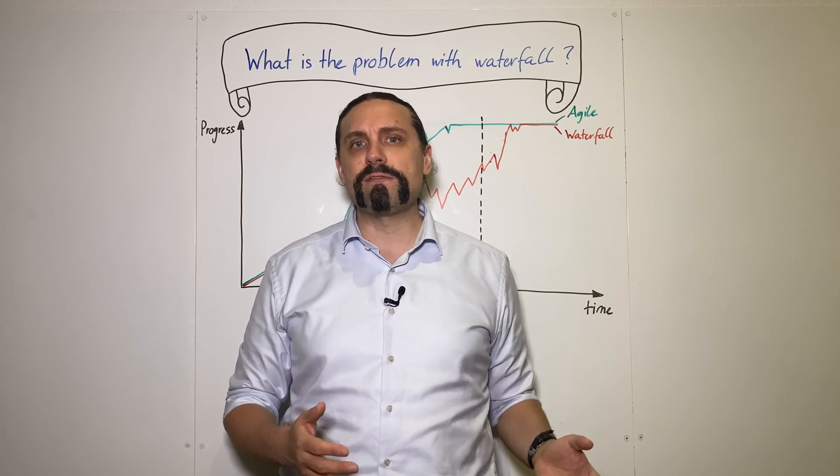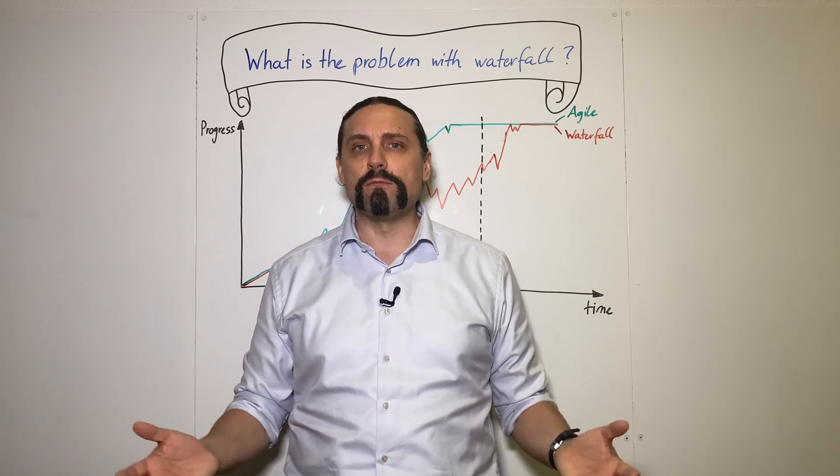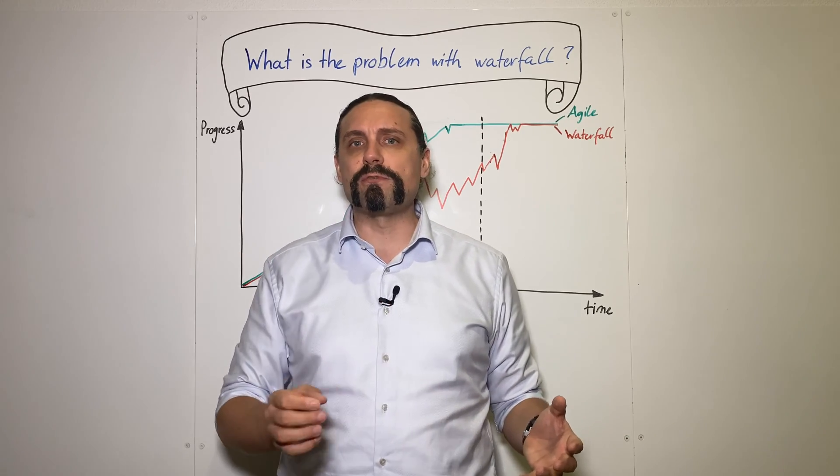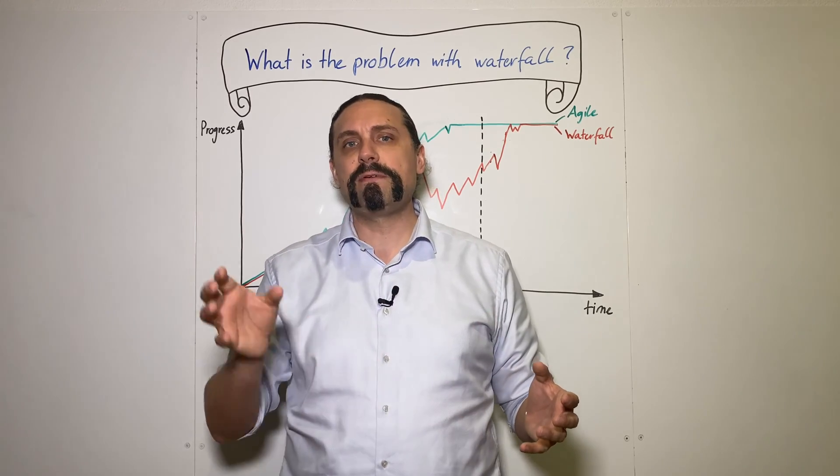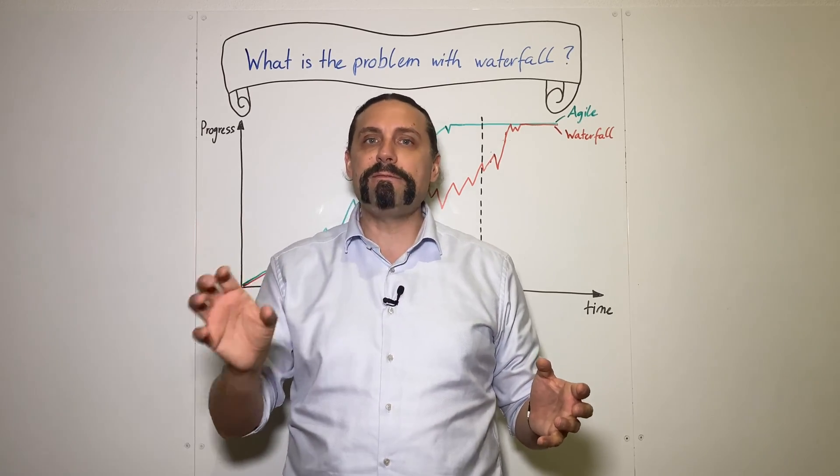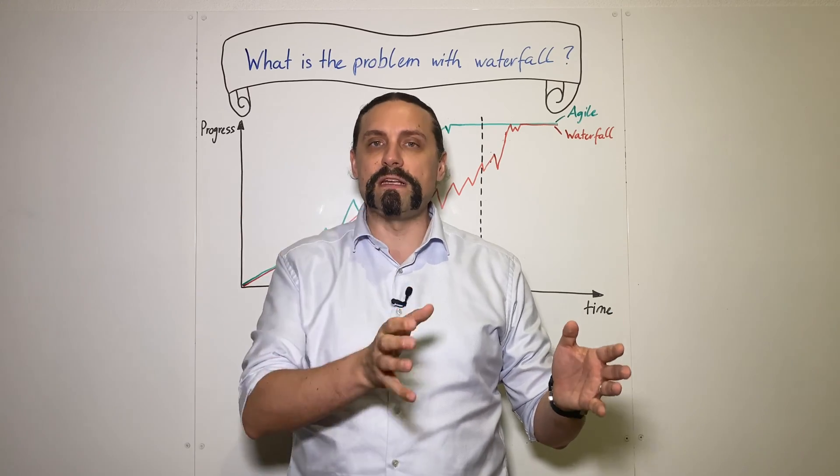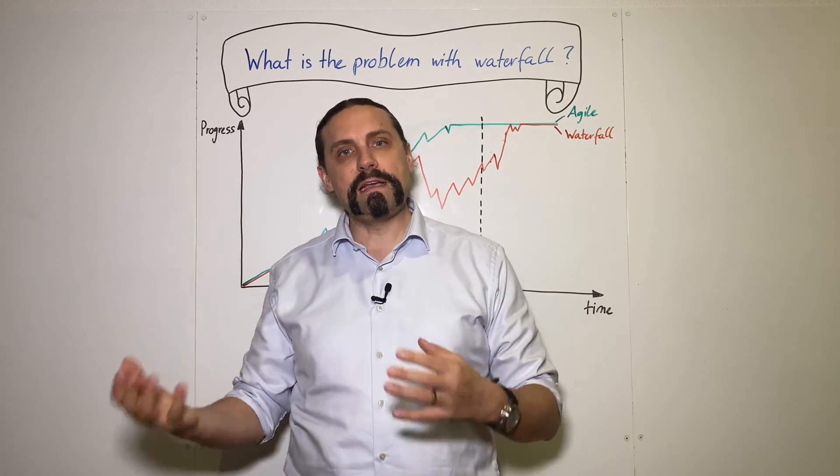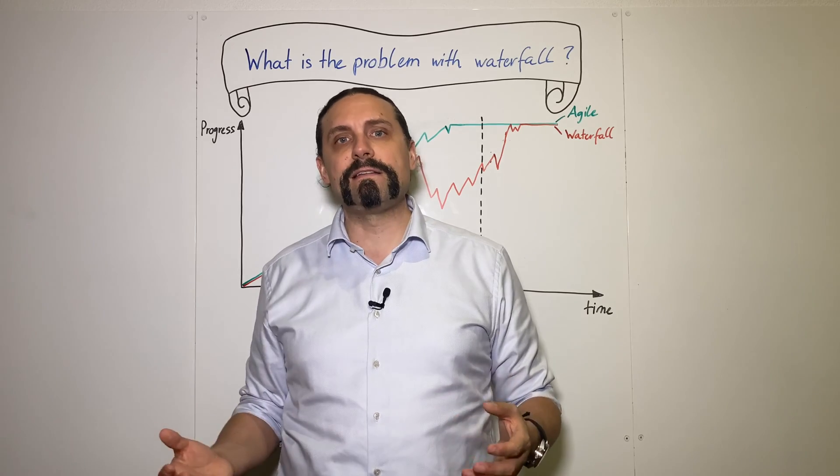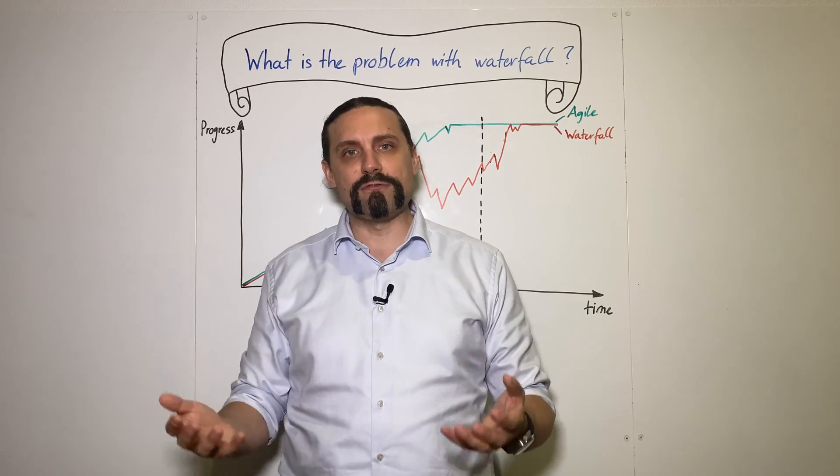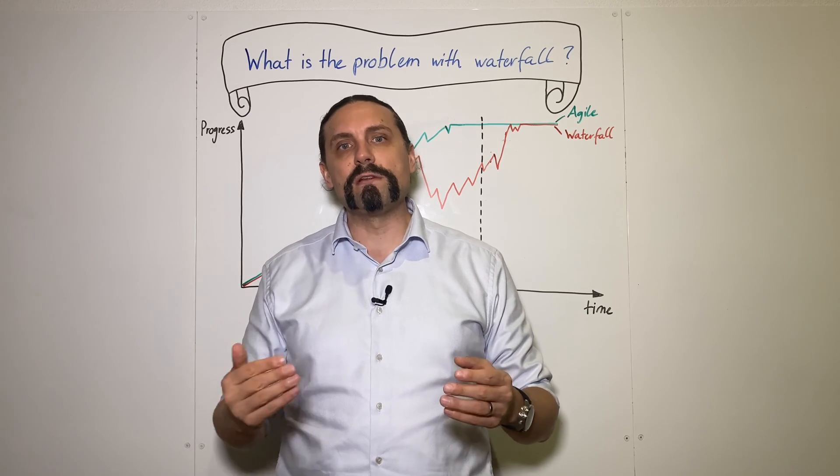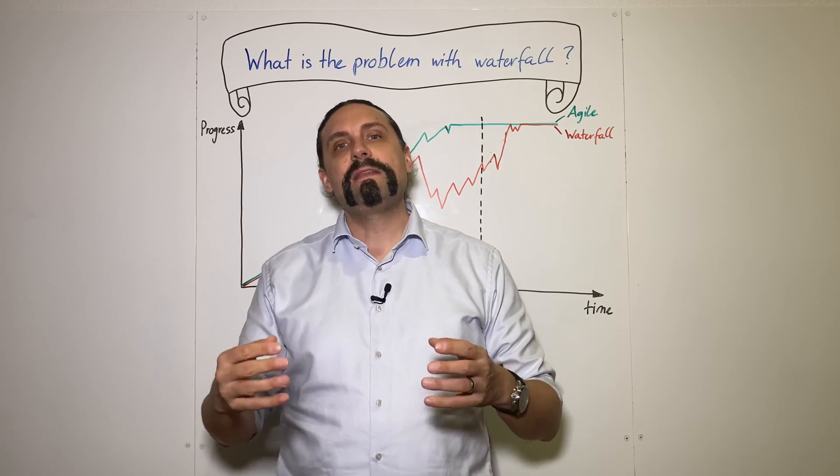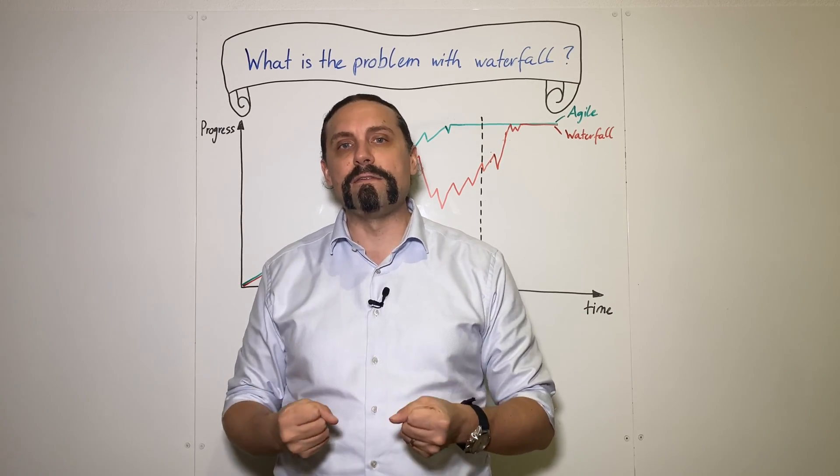In my previous video I showed you that the waterfall process is a sequential process where you go process step by process step through these steps, and if the step is finished then you go into the next step. The agile process on the other hand is an incremental iterative approach where you go very fast through all these steps and always deliver value for the customer.